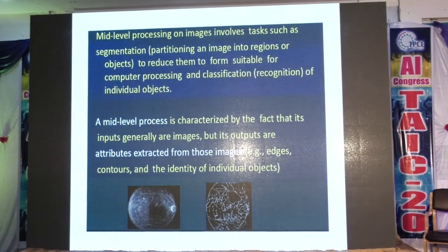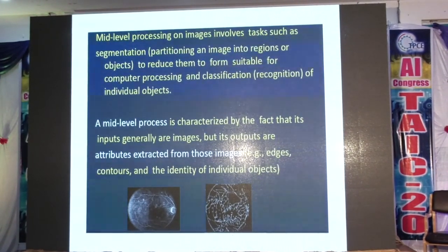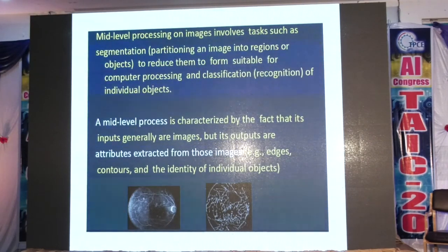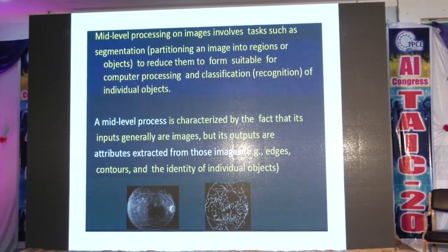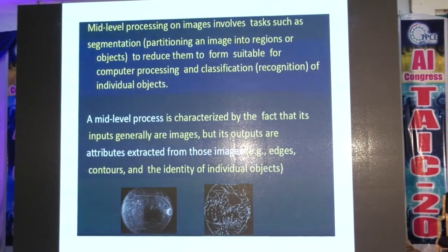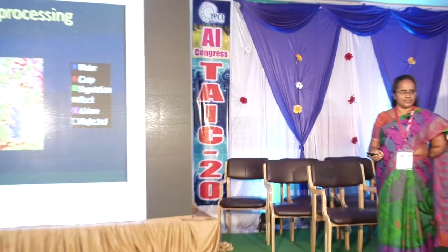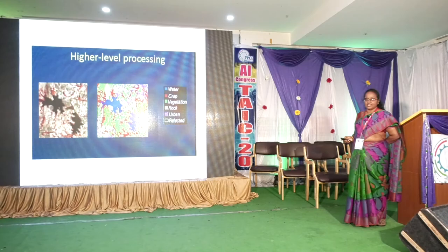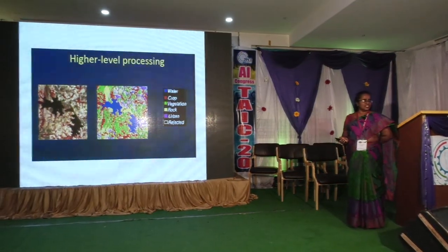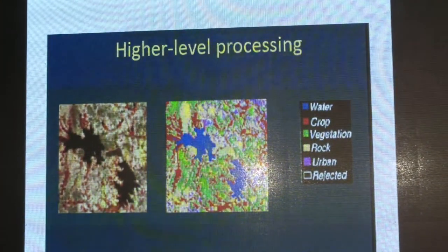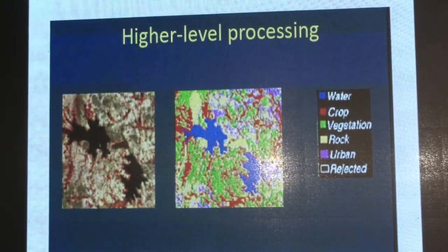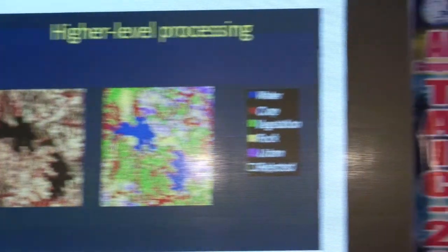This will be medium level processing. If you are considering medium level, the input will be the image and the output will be the attributes. Here the example is considered — we are going to take the measurements: whether the length is correct, width is correct, blood is circulating properly — like that, you can analyse. This will be called high level. If you are considering a geographical image from satellites, whatever you are acquiring, the colours are different, bands of frequencies are different. Those are converted again into a different representation — that is the characteristics and attributes of the image. That will be called high level processing.